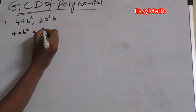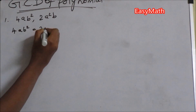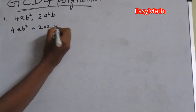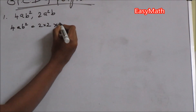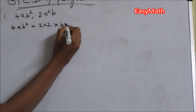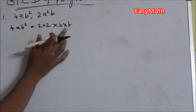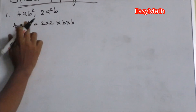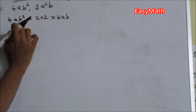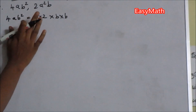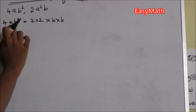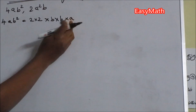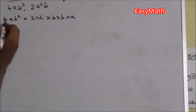4ab² can be expanded as 2 × 2 × b × b. We are taking a with power 1, so we write a. The power of each variable should be expanded first.